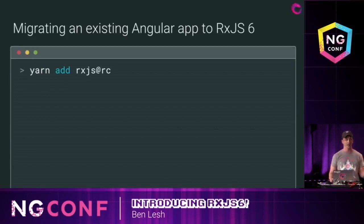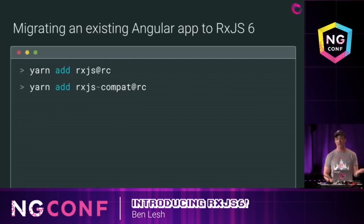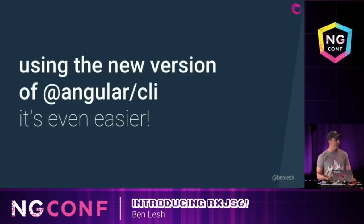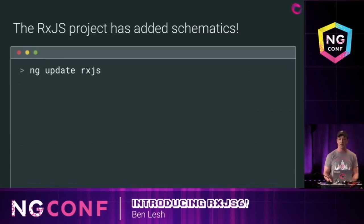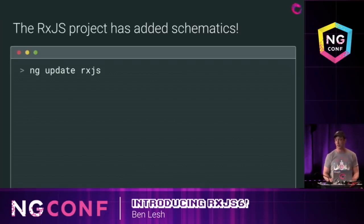Things are going to start breaking if you're using RxJS 5 features until you install rxjs-compat. What rxjs-compat is, is a library that provides a bridge to all of the old import sites and old types that existed in RxJS 5.5. And if you're using the newest version of Angular CLI, it's even easier — you just do ng-update rxjs, because we've added schematics to the RxJS library and package itself that will run with ng-update and basically do those previous two steps for you.